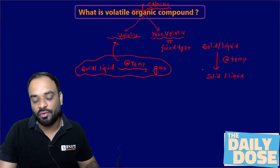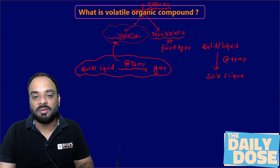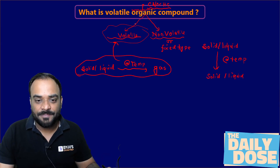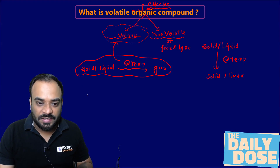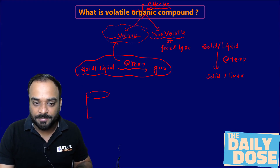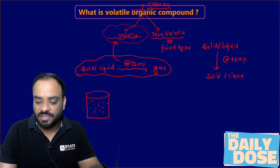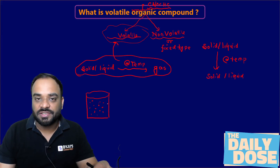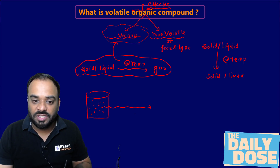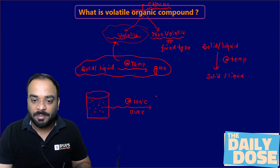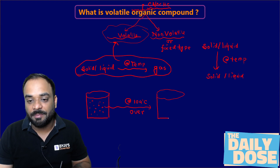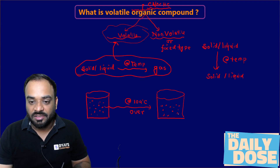The question is: how can we measure the volatile organic compound in our water? Let's suppose you have a sample of water. In this water you may have some solid concentration — suspended solid, dissolved solid, and colloidal solid. If you put this particular sample at a temperature of 104 degrees centigrade in the oven, whatever water you have will get evaporated, and only the solid particles remain in the sample.